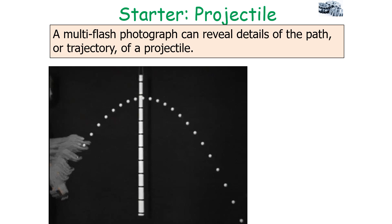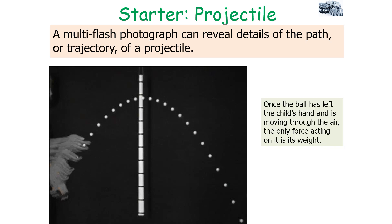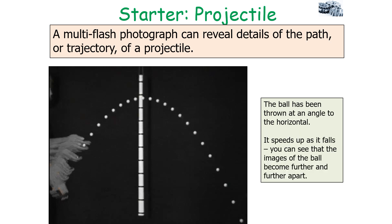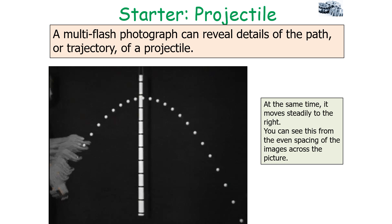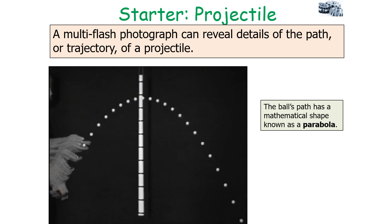A multi-flash photograph can reveal details of the path or trajectory of a projectile. In this example, once the ball has left the child's hand and is moving through the air, the only force acting on it is its weight. You can see it speeds up as it falls because the images of the ball become further and further apart, while at the same time it moves steadily to the right, shown by the even spacing of images across the picture. The ball's path has a mathematical shape known as a parabola.